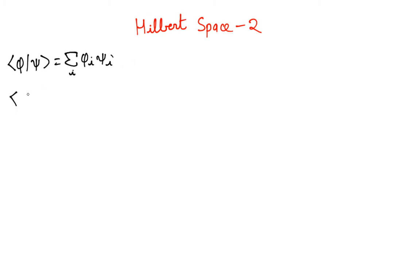This changes if you have complex vector space. For example, this is written as that. So from here we can see that phi psi is equal to psi phi star.